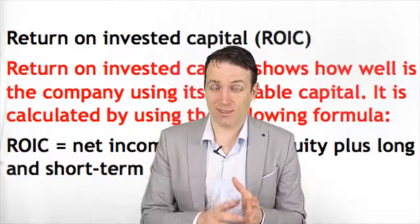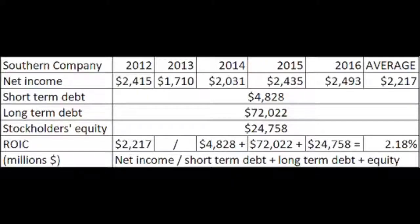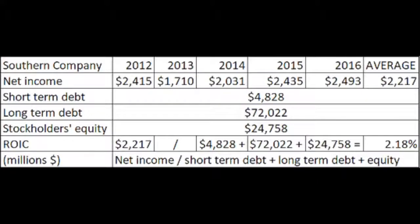A value investor is always conservative, so I'll try to keep it simple. Let's calculate Return on Investment Capital for two companies: Southern Company and Apple. In this table, I have used the five-year average net income, short-term debt, long-term debt, and stockholders' equity. For Apple, the average net income is 58 billion.